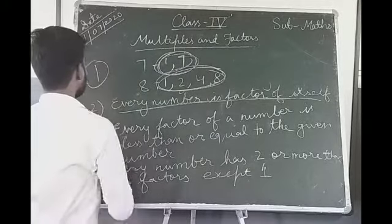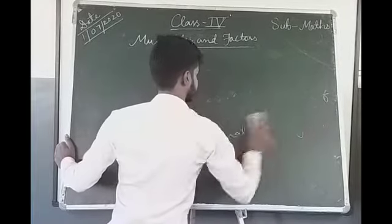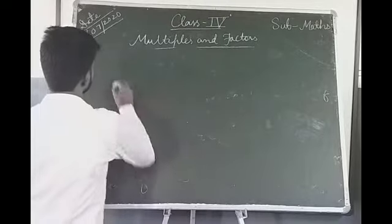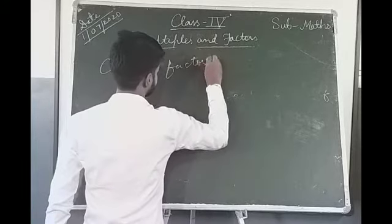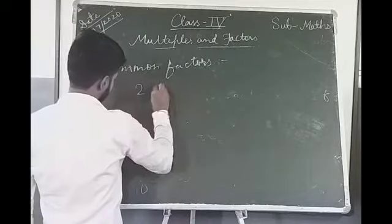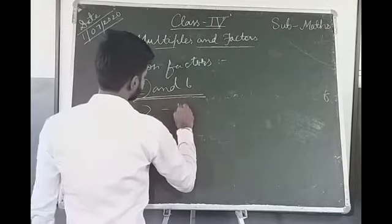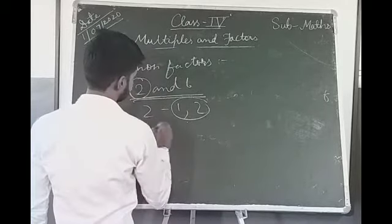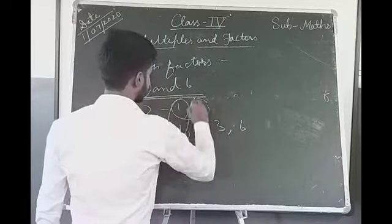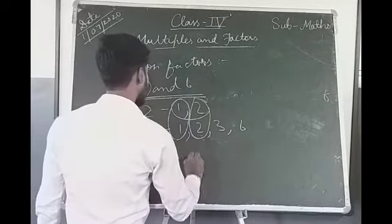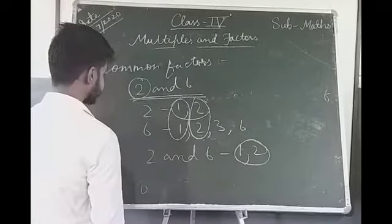Now we can find the common factors of some numbers. For example, the common factors of 2 and 6: the factors of 2 are 1 and 2; the factors of 6 are 1, 2, 3 and 6. So the common factors of 2 and 6 are 1 and 2, meaning 1 and 2 divide both 2 and 6.